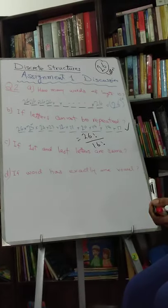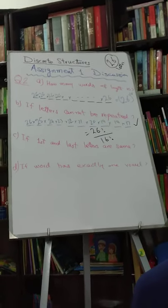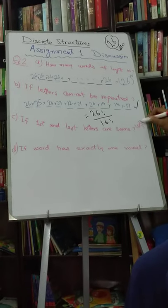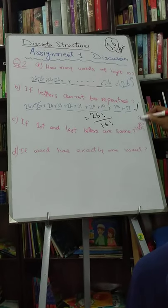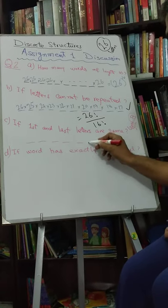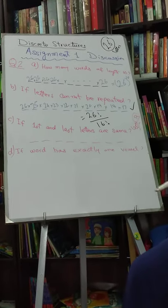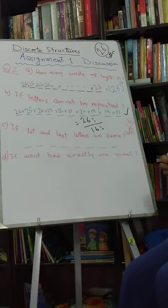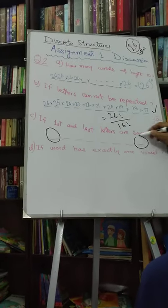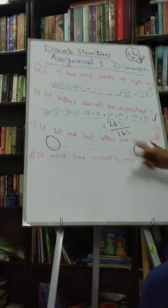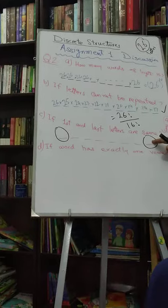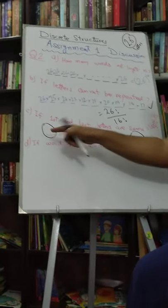So let's move to the C part. If first and last letter are the same and the length is 8 — so we have 8 positions. It says that the first letter and the last letter are the same. It means whatever we write at the first position, we have to just copy it at the last position. So the last position doesn't have any independent choice — it will be the same as the first one.